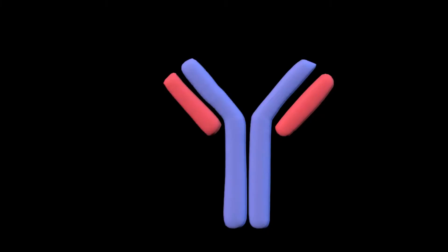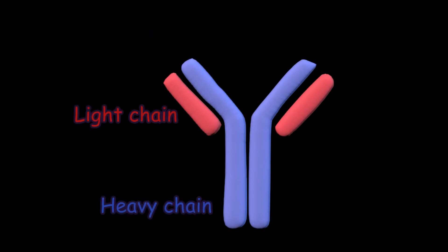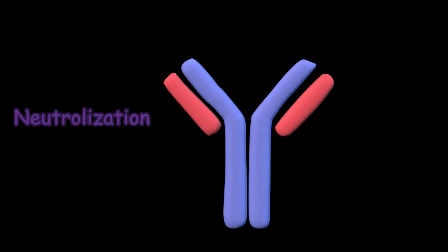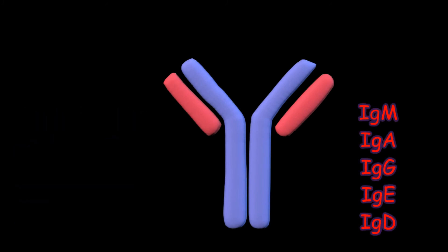Antibodies are a type of protein called immunoglobulin, consisting of heavy chain and light chain of proteins. They kill specific microbes through neutralization, agglutination, precipitation, lysis, and antitoxin mechanisms. There are five types of antibodies: IgM, IgA, IgG, IgE, and IgD.